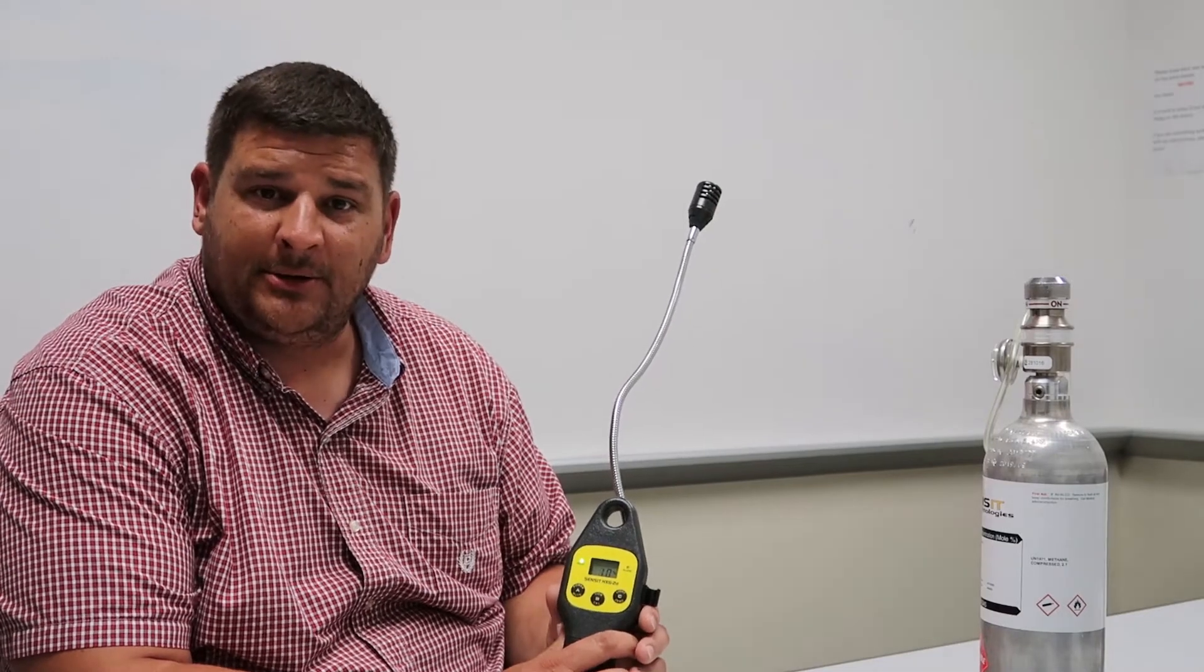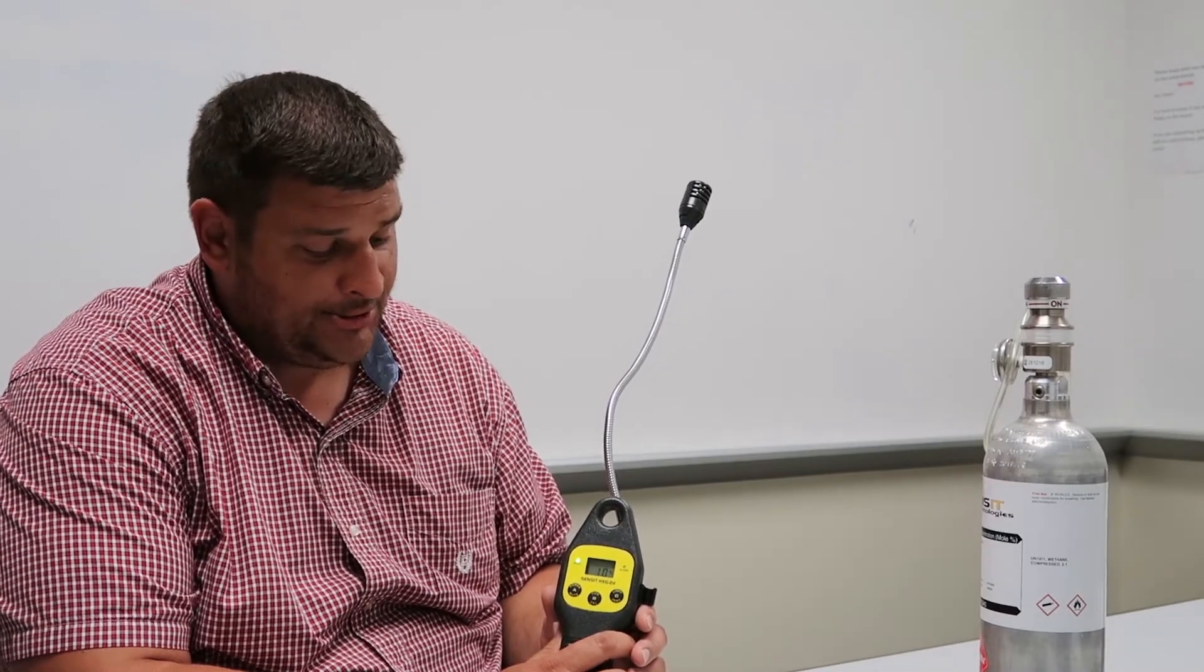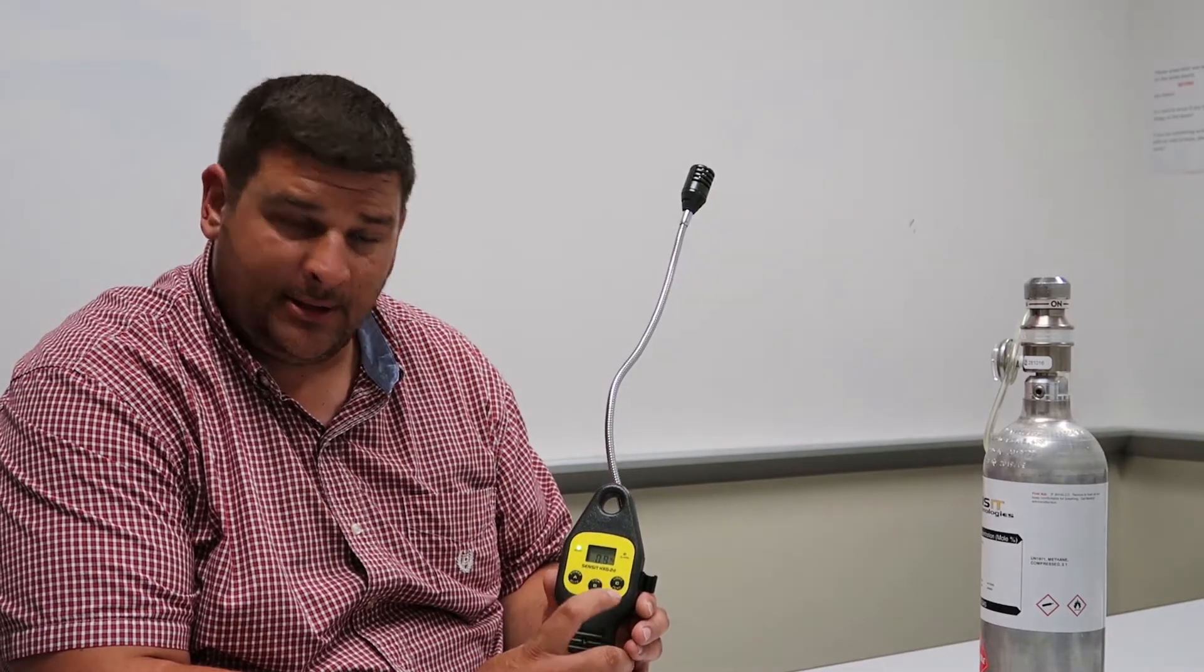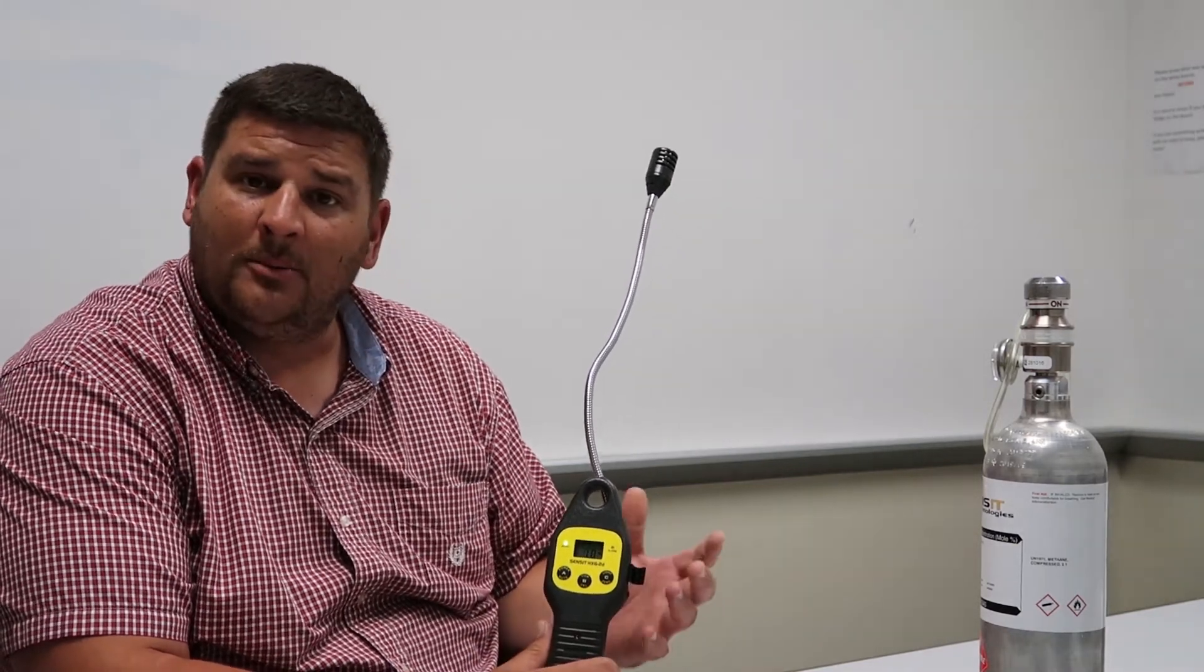So we're here today to talk about the tick rate and the use of it on the HXG 2D. This one has an analog tick. We've turned our instrument on and let it warm up for a couple of minutes.